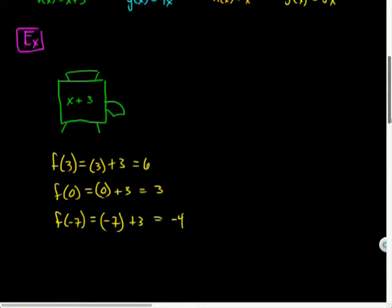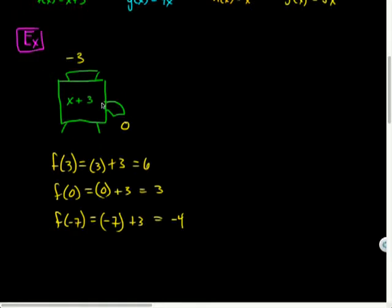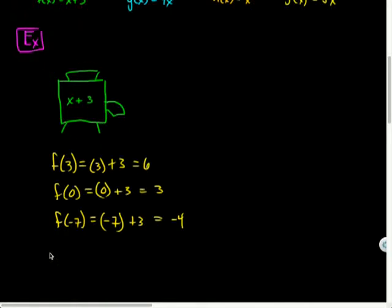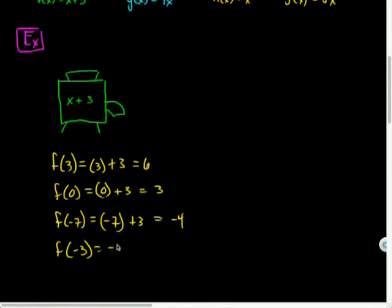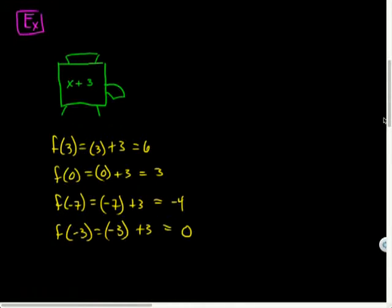What if I wanted to find out what I'd have to plug into this machine to get 0 back? Negative 3. So f of negative 3 happens to be negative 3 plus 3, and that's a zero of this function.